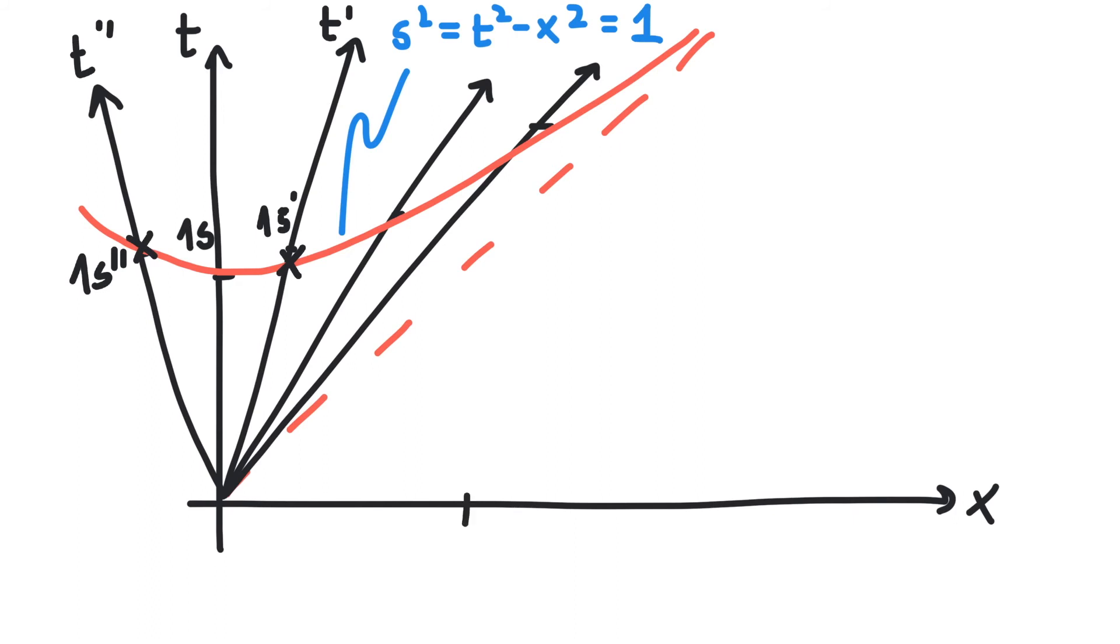The same is true for distances. We define 1 meter as the vector t equals 0 and x equals 1. Then s squared equals minus 1 and we get this hyperbola.